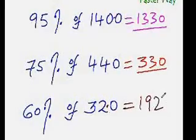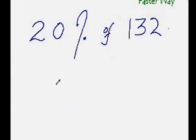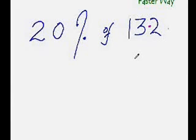This is the last example. Quickly find out what is 20% of 132. 10% would be 13.2, and 20% would be double of that, that is 26.4. That is your answer.